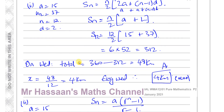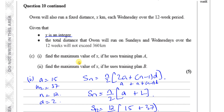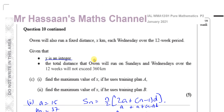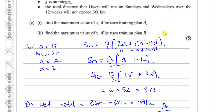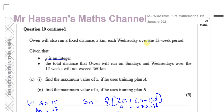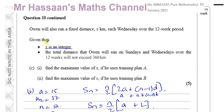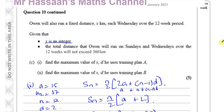So the answers for part C are 4 kilometres for plan A and 5 kilometres for plan B. That concludes question number 10 and the whole January 2021 paper. If you'd like to see other questions from this paper you can click the link that will appear on screen. Other questions from the topic of series and sequences are available — it's all in P2 now.